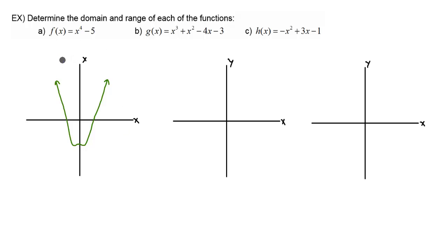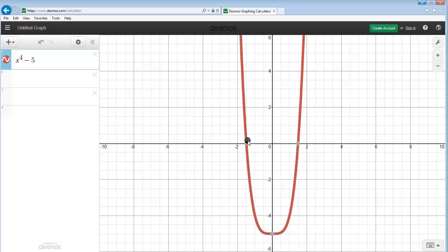Now we have to figure out what the domain is. The domain is the interval of all the possible x values, or the input values, of this graph. So basically, how far to the left can we go and how far to the right can we go? I'm going to look at my graph on Desmos.com — I graphed it already. We want to figure out how far to the left we can go, because we want our lowest x value.